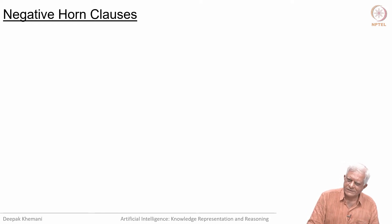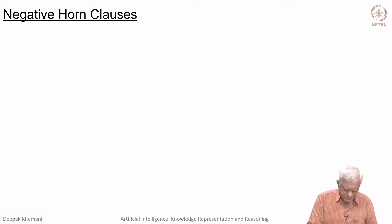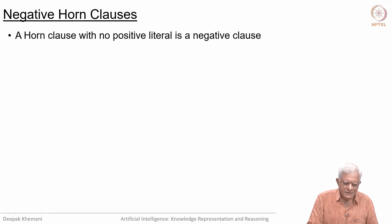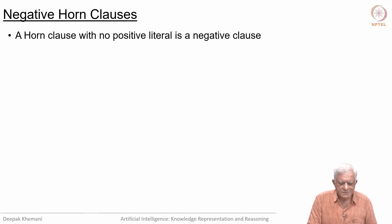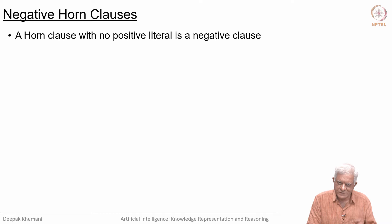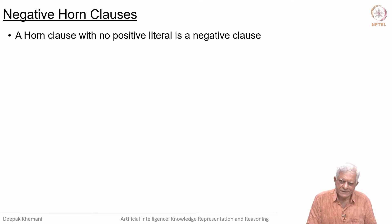What about negative horn clauses — what is the meaning of negative horn clauses? A horn clause with no positive literal is a negative clause. By definition, a positive clause has at least one positive literal; if it does not have any positive literal, then it is a negative clause.